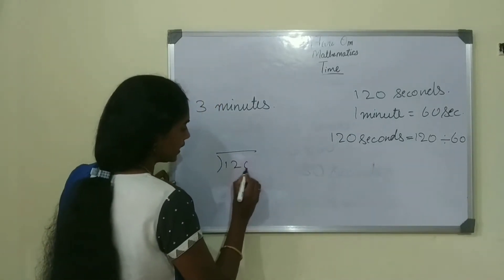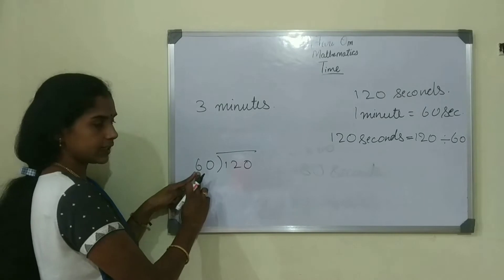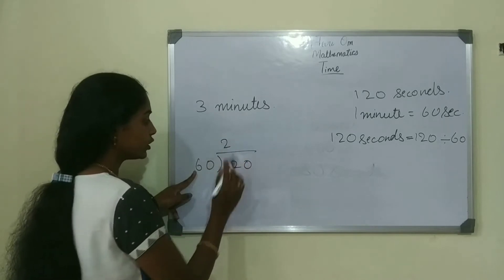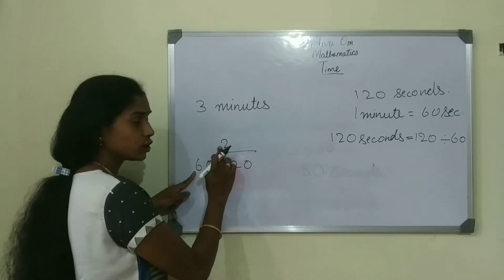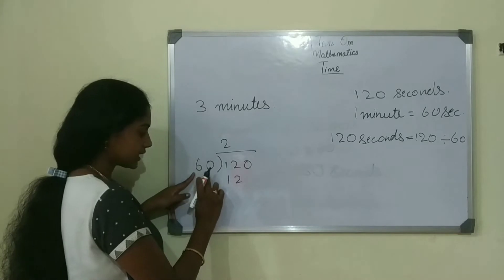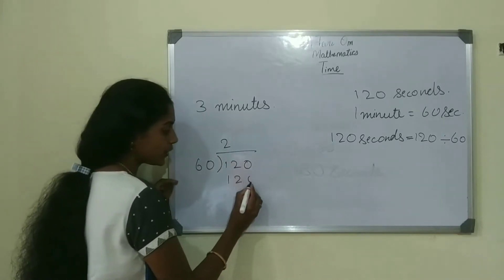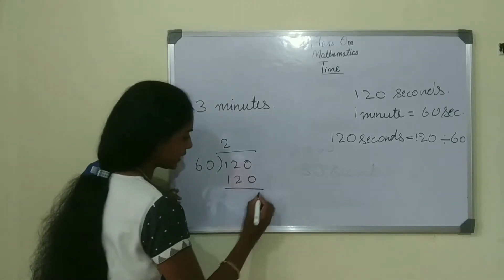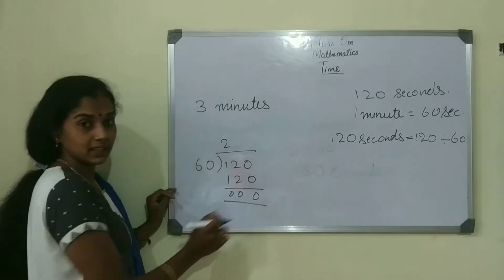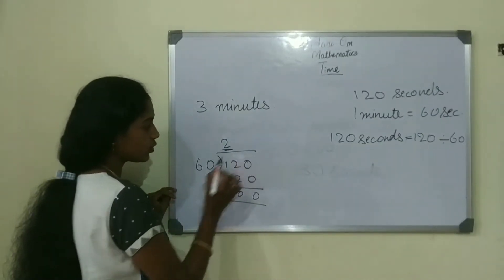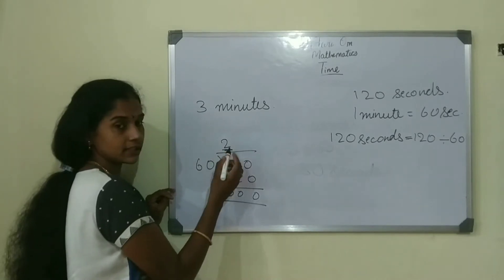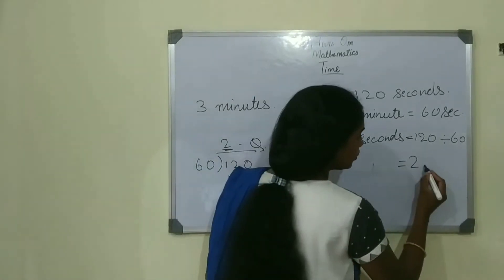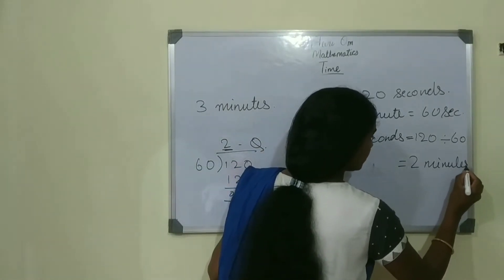120 divided by 60. 6 twos are 12, and 60 twos are 120. We are left with 0. The quotient is 2. So there are 2 minutes in 120 seconds.